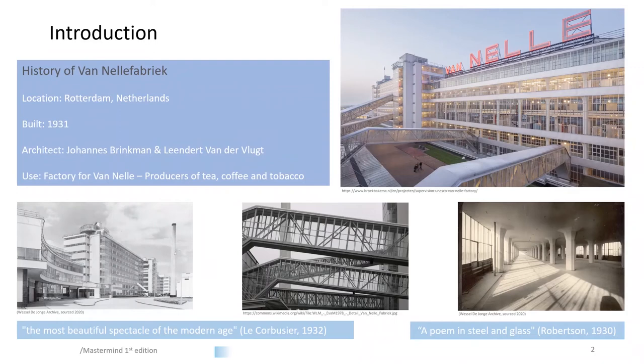Van Nelle Fabrik in Rotterdam was constructed between 1925 to 1931 and designed by architects Brinkman and Van der Vlugt. It was built as a modern state-of-the-art factory for Van Nelle, producers of coffee, tea and tobacco.